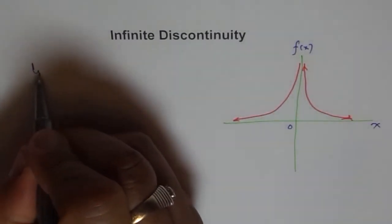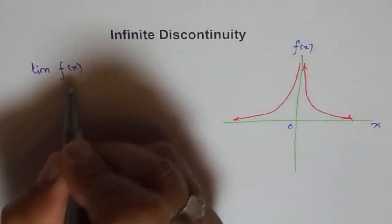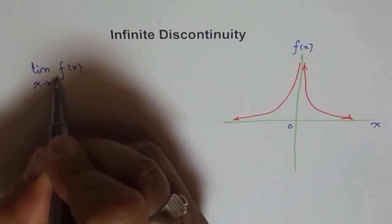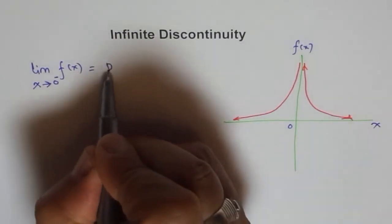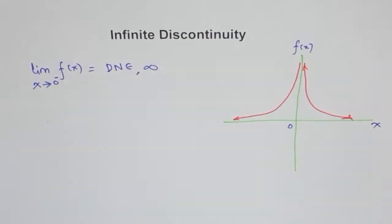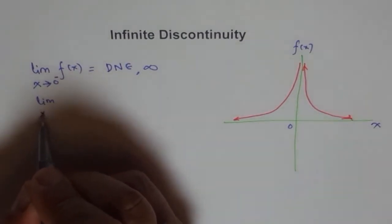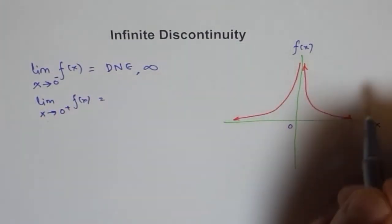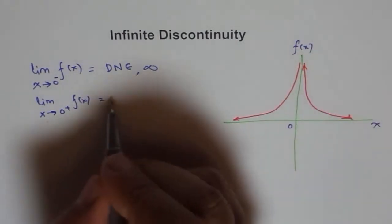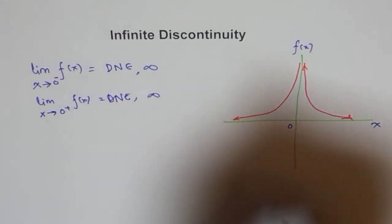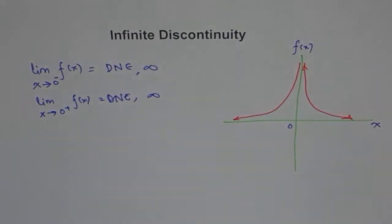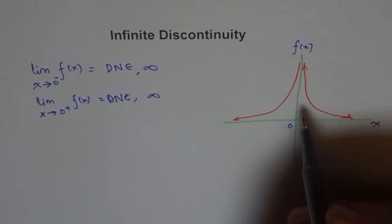So, what is the limit of the function? The limit of f(x) as x approaches 0 from the negative side — well, it does not exist. We can write infinity here, approaching positive infinity. How about the limit as x approaches 0 from the positive side? It also approaches infinity, so it does not exist. An infinite number is not really defined, so we don't reach a particular value. Therefore, the limit does not exist.